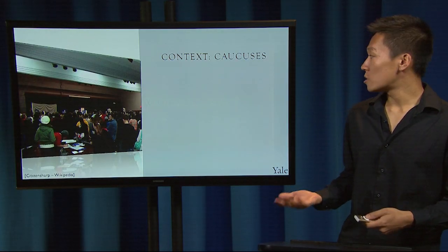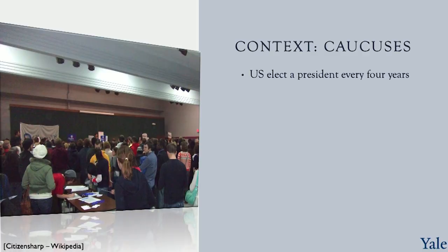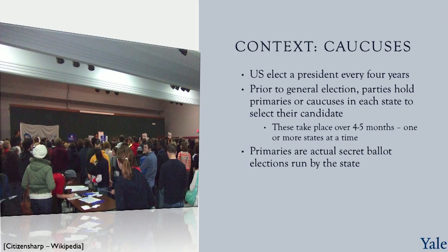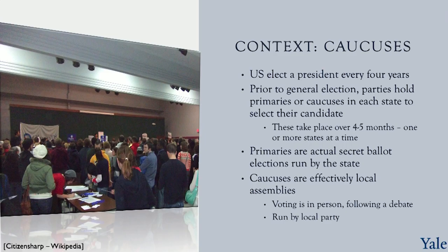Let's understand the context behind the Iowa Caucus. In the United States, a president is elected every four years, and prior to the general election, the major parties — the Democratic and Republican parties, as well as some smaller parties — hold primaries or caucuses in each state to select their candidate. Primaries are actual secret ballot elections run by the state, while caucuses are effectively local assemblies where voting is done in person following a debate, and they're run by the local party, not the state.